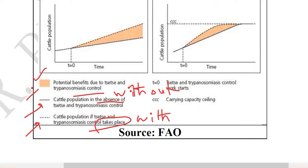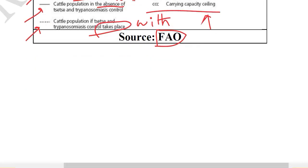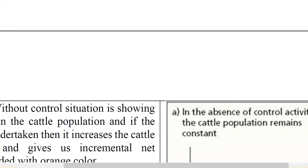T equals zero marks the beginning of the disease control — the point in time where treatment is started. The symbol CCC represents carrying capacity ceiling, which shows the maximum level of population that can be sustained on a certain farm. After understanding these components of the legend and acknowledging the reference — the Food and Agriculture Organization — we go to the details of each graph.